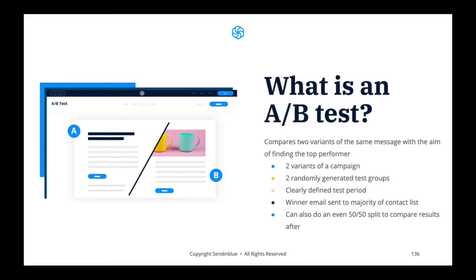From there, the winning version will be sent to the remaining 80% of your contact list. If you don't want to do a sampled A-B test, you can also do a clean even split between two versions and compare the results afterwards. It's up to you to decide which version of your A-B test will be more beneficial and guide your marketing strategy moving forward.